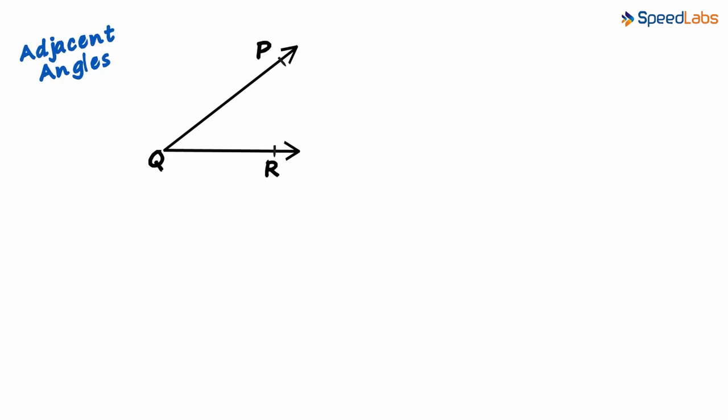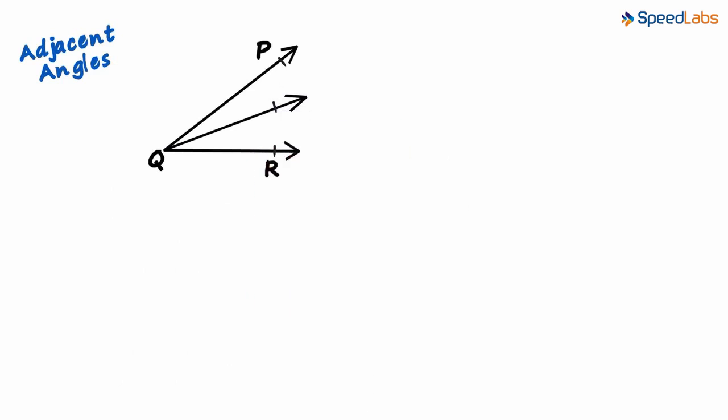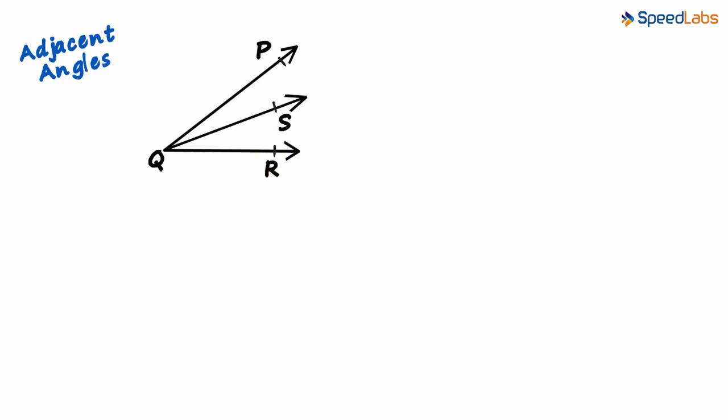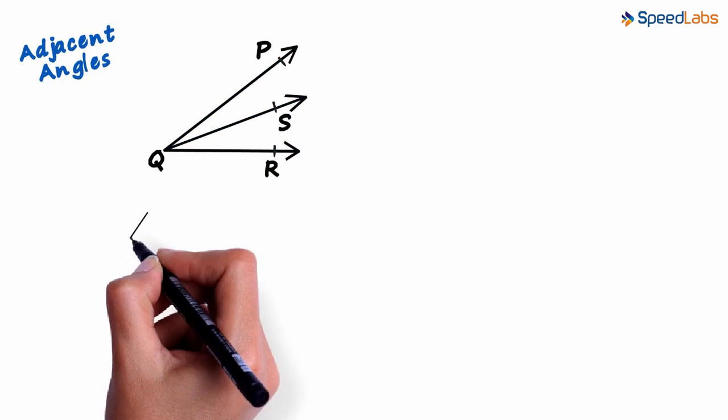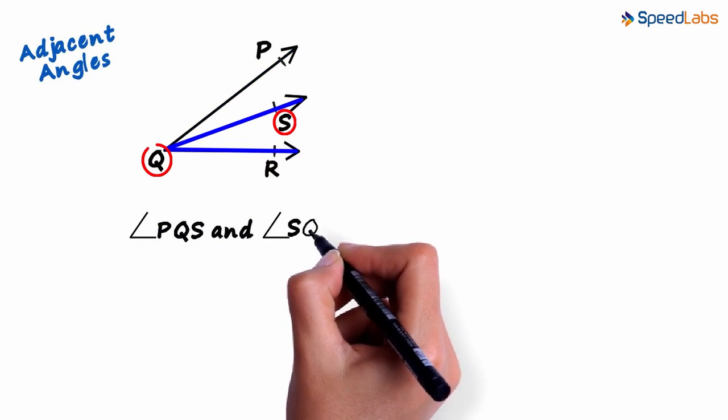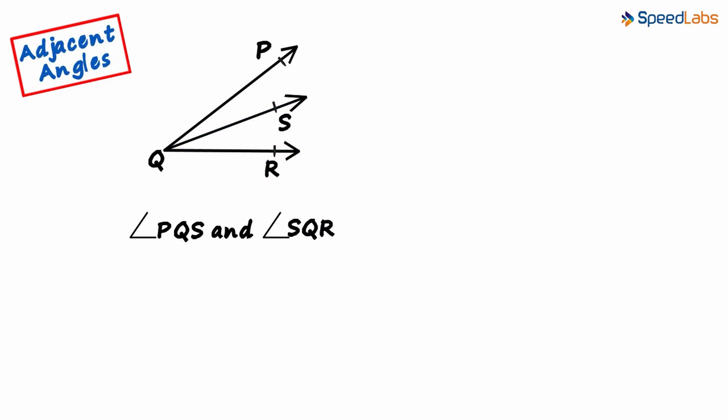Now let's do something interesting. We draw a ray through vertex Q. Let's call it ray QS. And guess what? We already have two adjacent angles. This angle and this one. So angle PQS and angle SQR are called adjacent angles.